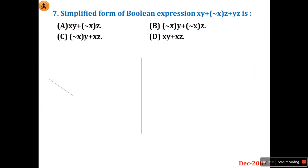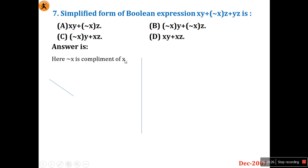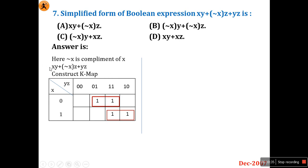Question 7: Simplify the Boolean expression xy + ¬xz + yz + yz. The options include xy + ¬xz. Take the expression and construct a K-map. Map xy as 1, ¬xz (where x̄ and z are 1), and yz values onto the K-map grid with axes x, y, and z.